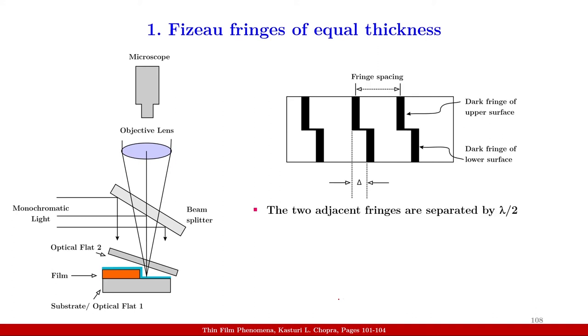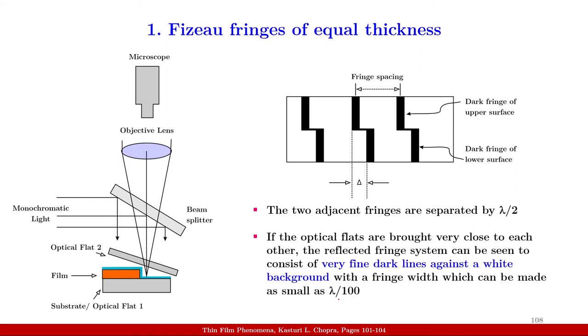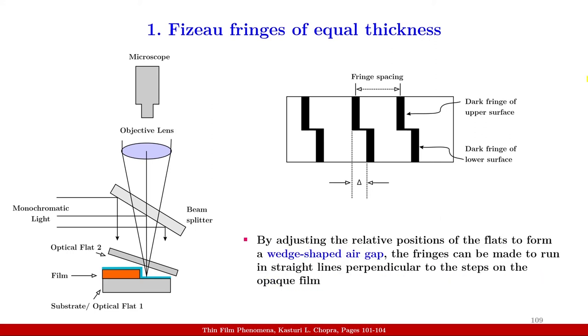The two adjacent fringes in this case will be separated by lambda by 2 where lambda is a wavelength of the monochromatic light that is used. If the optical flats are brought very close to each other, the reflected fringe system can be seen to consist of very fine dark lines against a white background with a fringe width which can be made as small as lambda by 100. By adjusting the relative positions of the flats to form a wedge-shaped air gap as you see in this figure, the fringes can be made to run in straight lines perpendicular to the steps on the opaque film.